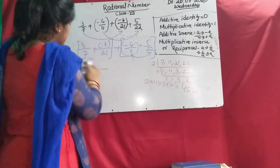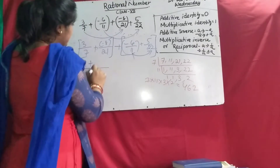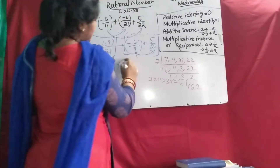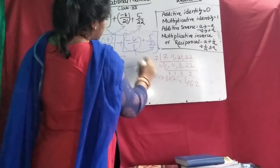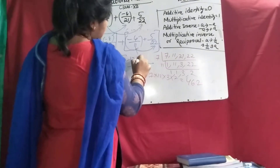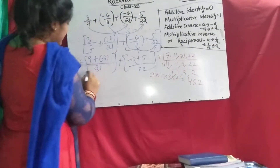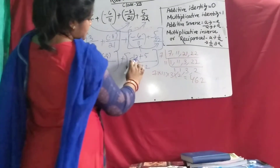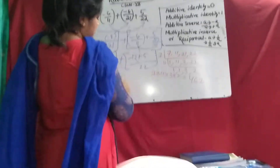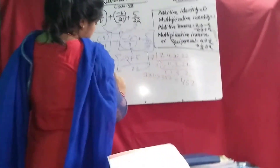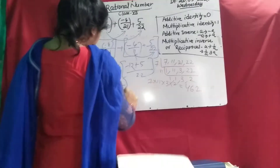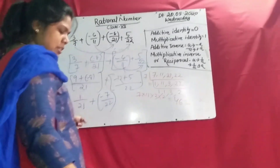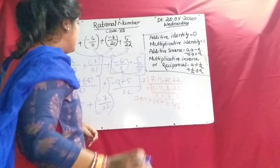With LCM 21: 3 times 3 is 9 plus minus 8 gives 1/21. Then with LCM 22: minus 12 plus 5 gives minus 7/22. Again use LCM of 21 and 22, then you can solve the final answer. This is all about that — you could do yourself.